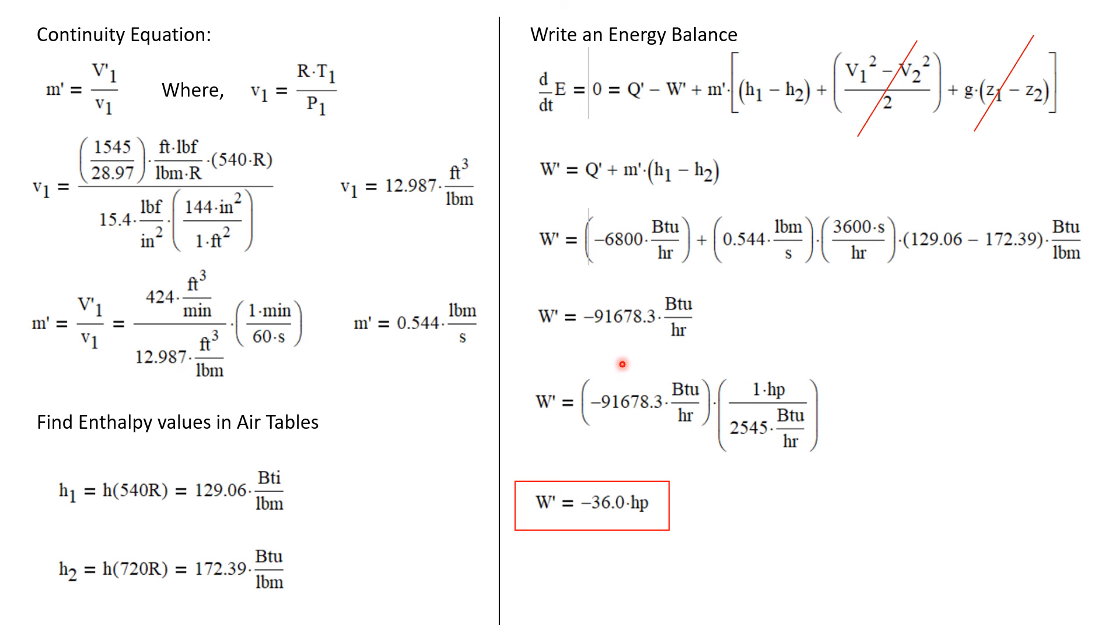But we were asked to provide the power requirement in horsepower. One horsepower is equivalent to 2,545 BTUs per hour. And so the power requirement of the compressor is 36 horsepower.